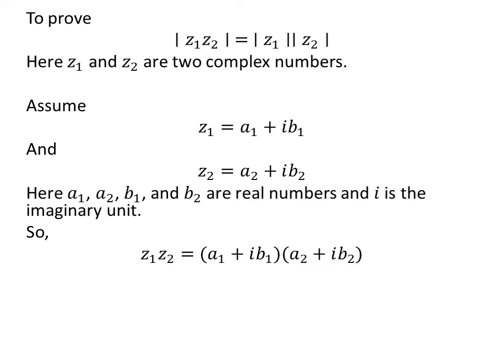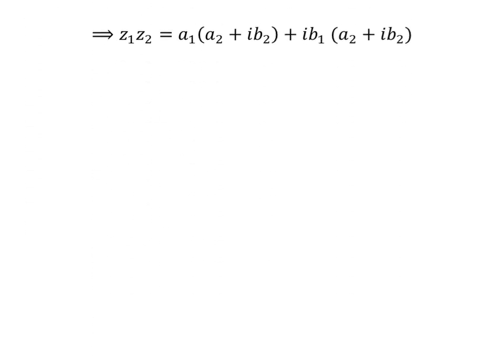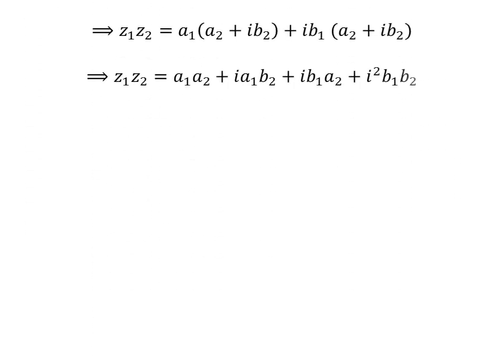So, z1 times z2 is equal to (a1 plus i times b1) times (a2 plus i times b2). Straight multiplication gives us z1 times z2 is equal to a1·a2 plus i·a1·b2 plus i·b1·a2 plus i squared times b1·b2.